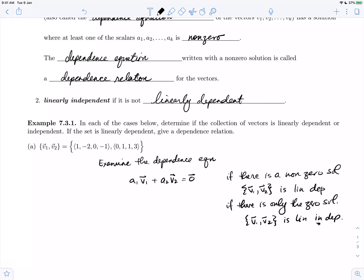This dependence equation is a vector equation, and we know vector equations have equivalent linear systems. So we will examine the equivalent linear system to determine the number of solutions.